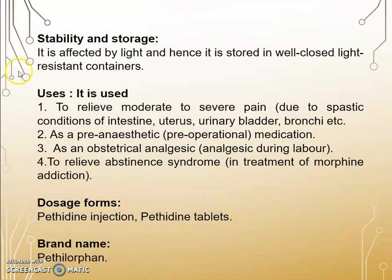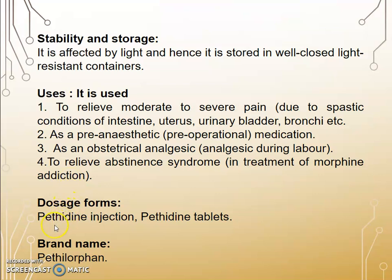Stability and storage: Pethidine is affected by light, hence it is stored in a well-closed, light-resistant container. Uses: it is used to relieve moderate to severe pain due to spastic conditions of the intestine, uterus, urinary bladder, and bronchi; as a pre-anesthetic, pre-operative medication; as an obstetrical analgesic during labour pain; and to relieve abstinence syndrome in the treatment of morphine addiction. Dosage form: Pethidine injection. Brand name: Pethidine or Penic.